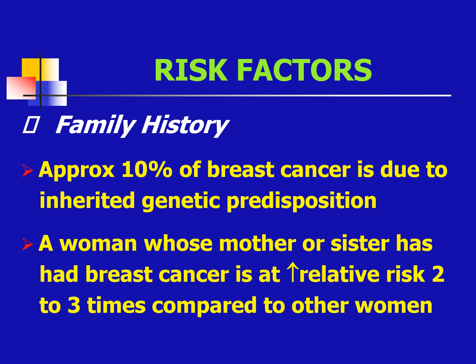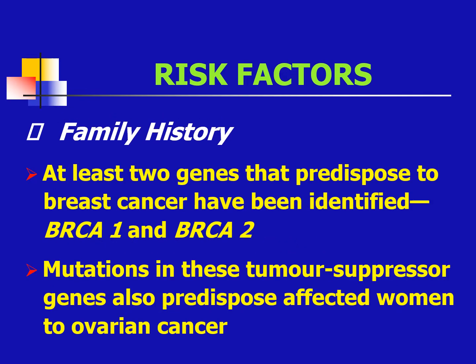Another risk factor would be family history. 10% of breast cancer is due to inherited genetic predisposition. A woman whose mother or sister has had breast cancer is at an increased relative risk of 2 to 3 times compared to other women. At least 2 genes that predispose to breast cancer have been identified: BRCA1 and BRCA2. Mutations in these tumor suppressor genes also predispose affected women to ovarian cancer.